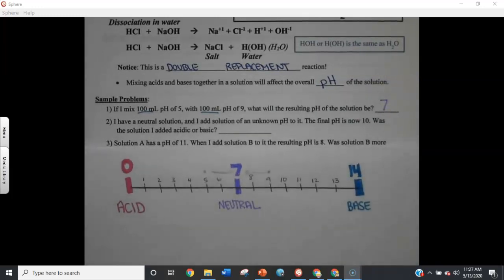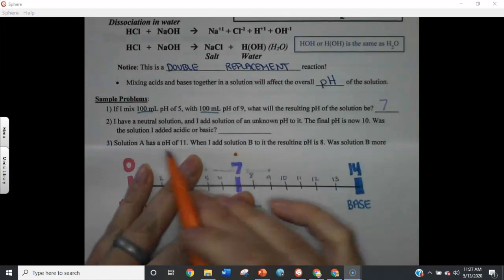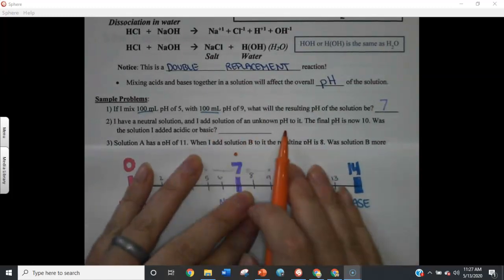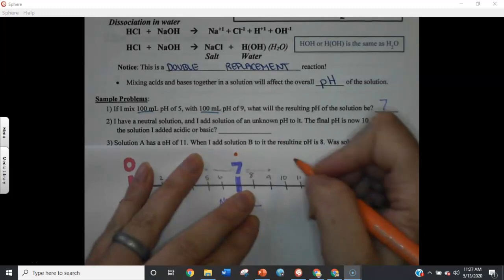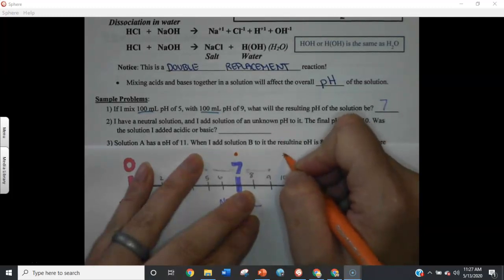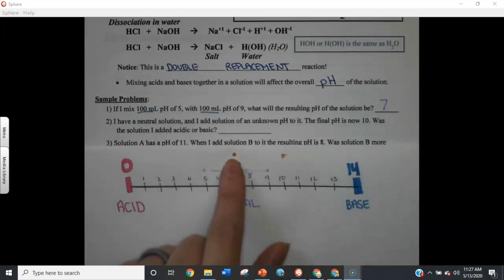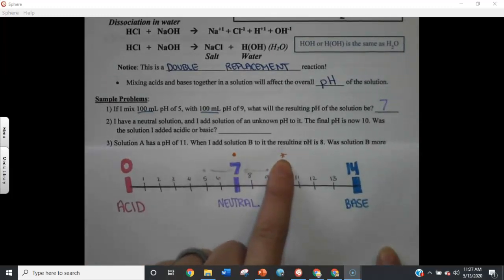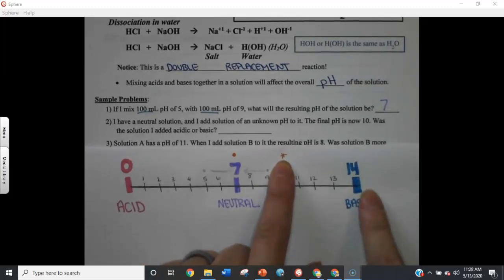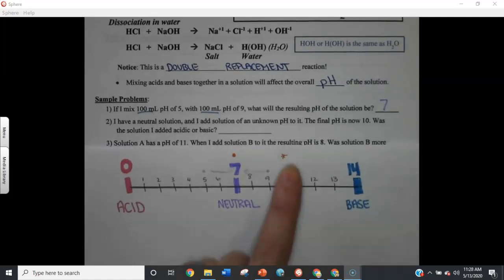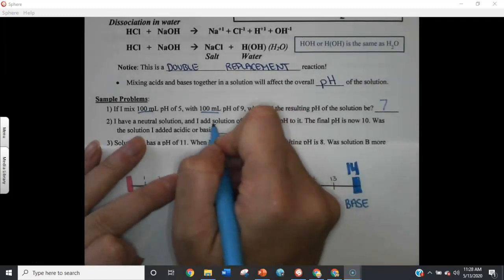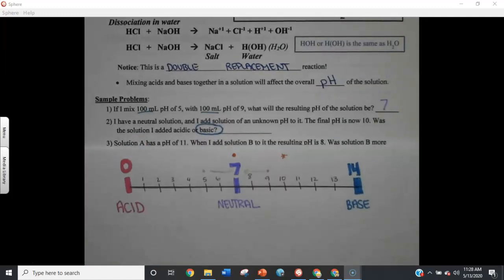Question two says, I have a neutral solution. So, I'm starting right here. I have a neutral solution, and I add a solution of an unknown pH to it. The final solution is now pH of 10, was the solution that I added acidic or basic? So, I was here, and I moved here. So, I had purple paint, and now my paint is more blue. So, what did I add to it? I must have added something blue to it, something basic. So, I must have added something basic to that neutral solution if it became basic.